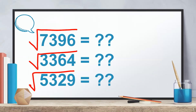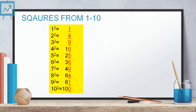To start with, all of you will be knowing the squares of numbers from 1 to 10: 1² = 1, 2² = 4, 3² = 9, 4² = 16, 5² = 25, 6² = 36, 7² = 49, 8² = 64, 9² = 81, and 10² = 100.